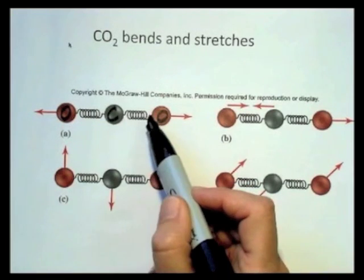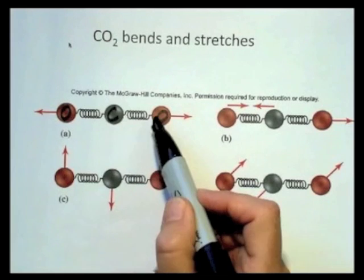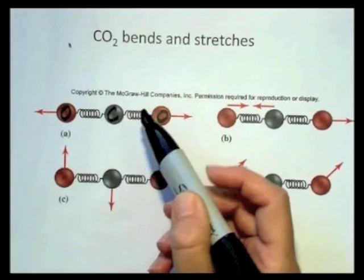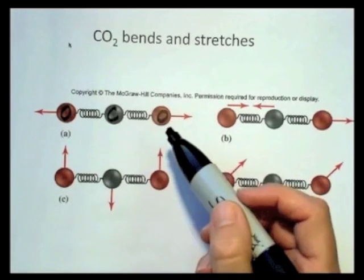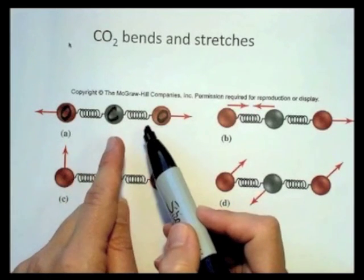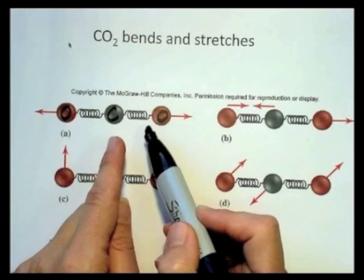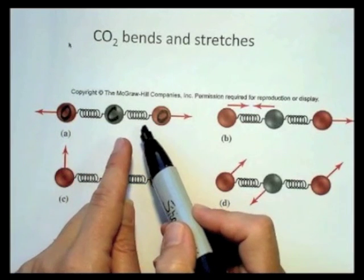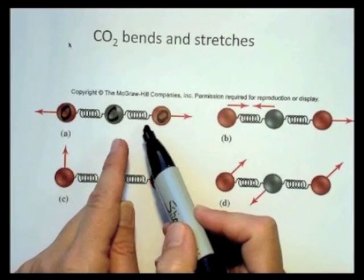Because as it turns out, atoms that are participating in a chemical bond are not static. They're not fixed in space, but rather they vibrate back and forth at a certain rate. So all chemical bonds can be modeled also as springs. It's the next higher level of understanding of molecules.